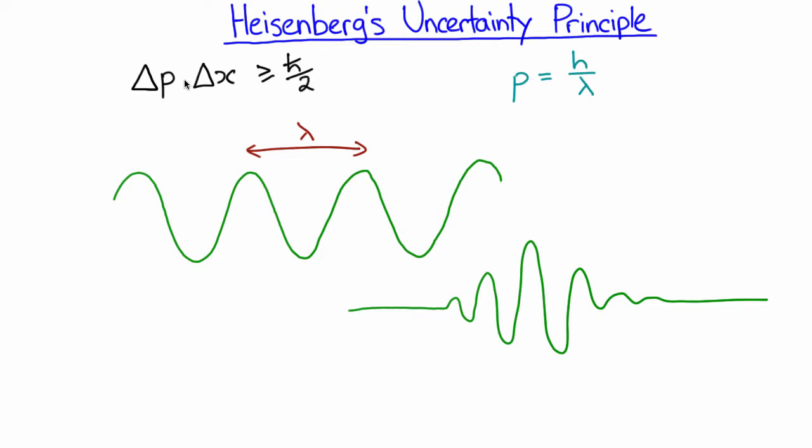Unfortunately, it doesn't now have a well-defined wavelength. In order to make this wave here, you have to add a lot of different kinds of sine waves together. So you get a lot of different kinds of momentum. And so it has a large spread of momentum. So we've got a small spread in position and we get a large spread of momentum. And so there's this trade-off between the spread in position and the spread in momentum.